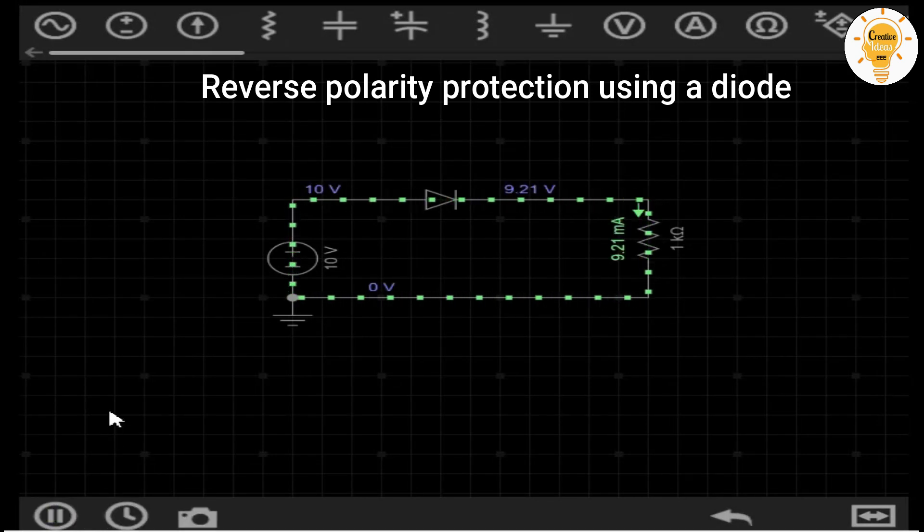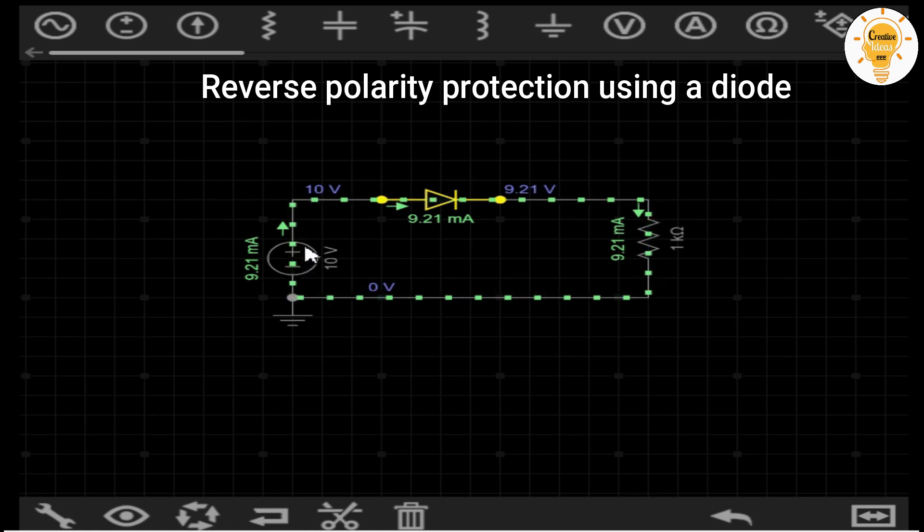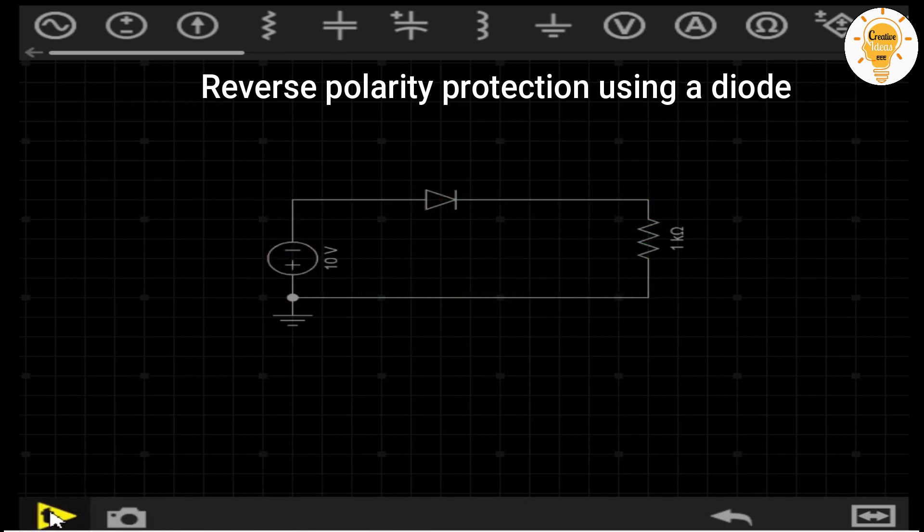If on the other hand we connect the power supply incorrectly, the diode will block the passage of current and therefore protect our circuit.